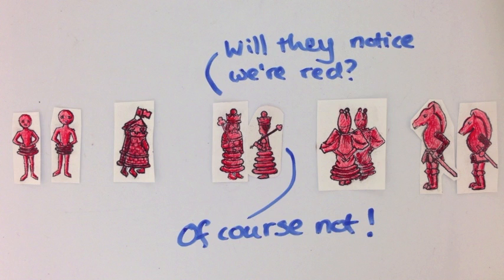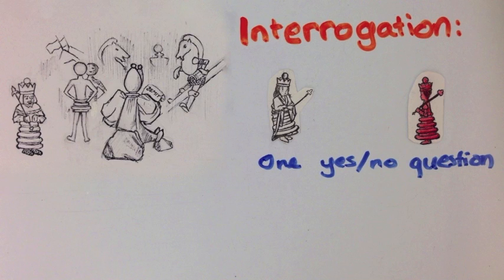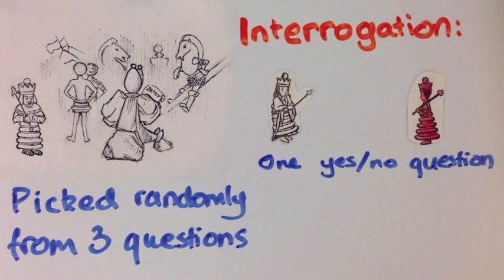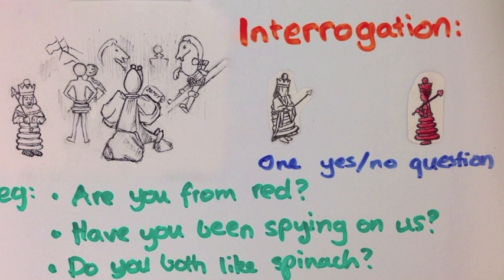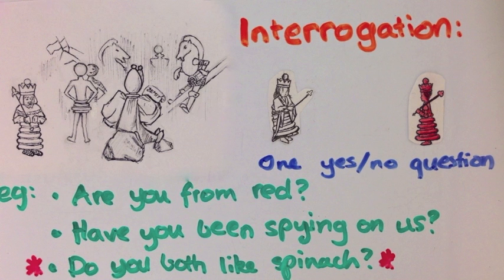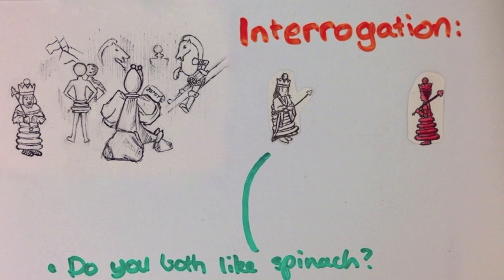Luckily for us we know a bit about how the enemy interrogates and it's quite weird. They always ask each person just one yes or no question and we know that they only ever ask one of three known questions. They seem to pick which one of the questions to ask randomly. You absolutely don't want the enemy to know the right answer to any of these three questions but you can't just get all your spies to lie. That's much too obvious.